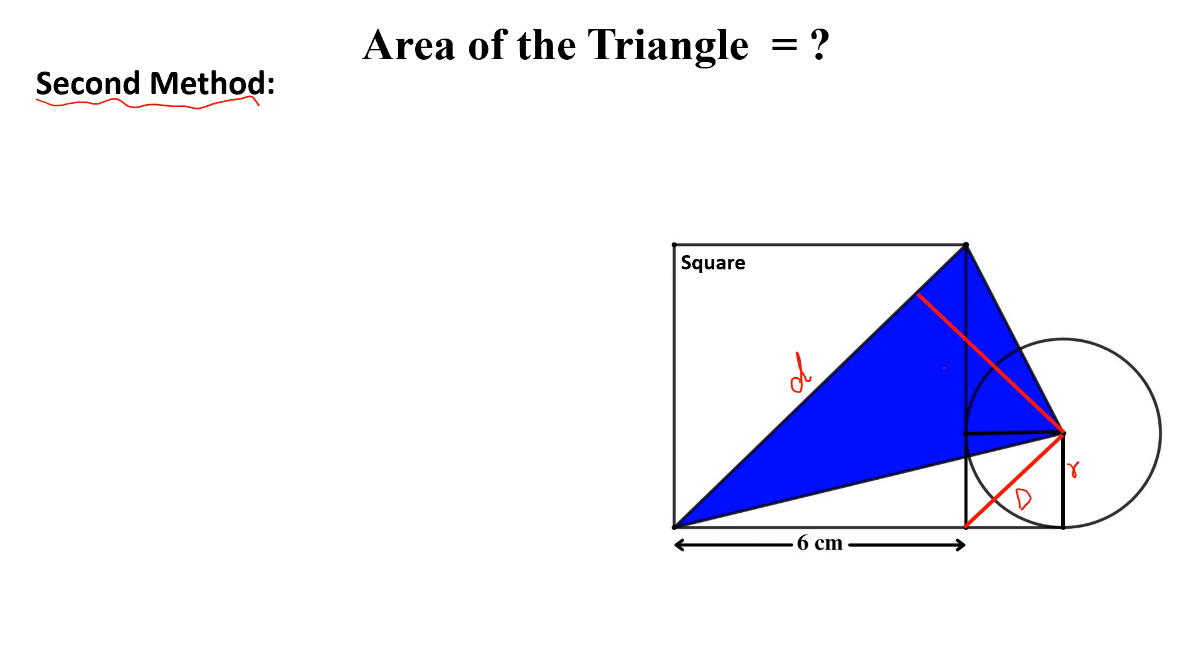The height of this blue triangle is equal to half of the diagonal of this big square. Now the area of the blue triangle will be equal to half multiplied by d multiplied by h. d is the base for this blue triangle and h is the height for this blue triangle.